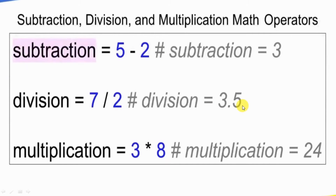Next is float division. If we divide the number, that is a decimal value — that is a float value. In Python, we will use float value. Next is the multiplication operator. Multiplication is equal to 3 into 8, which is 24.